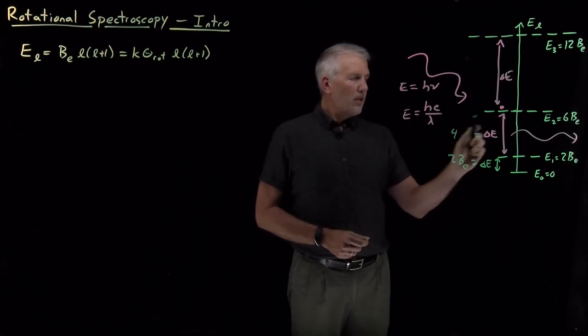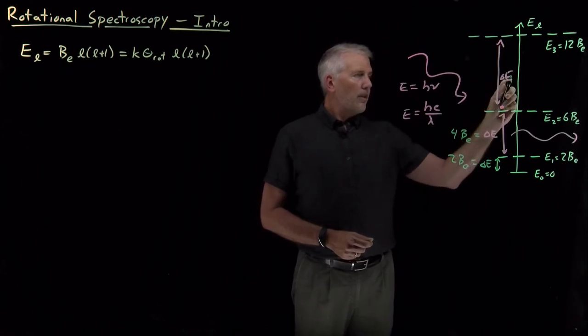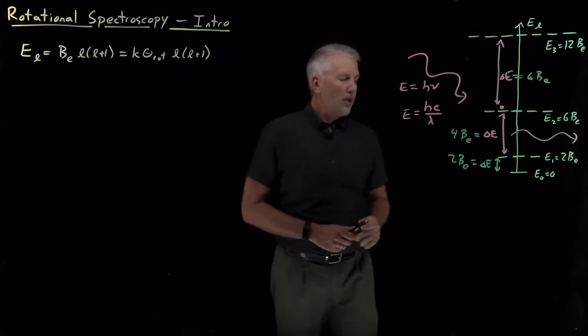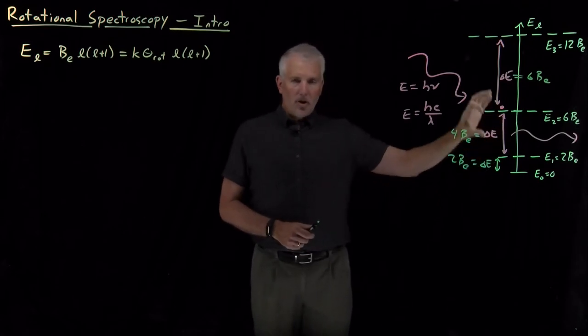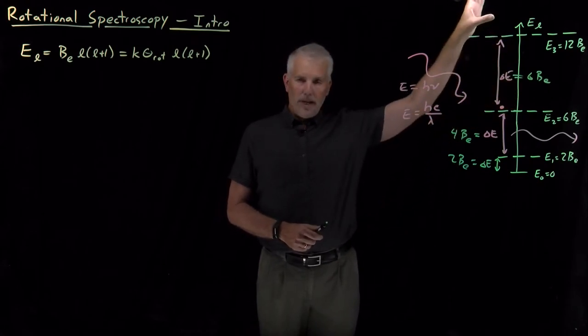This one would be 6BE minus 2BE is four. This one, twelve minus six is six. So each of these gaps is different—they get larger as they go up. The size of those gaps goes from two to four to six; the next one will be eight and so on.